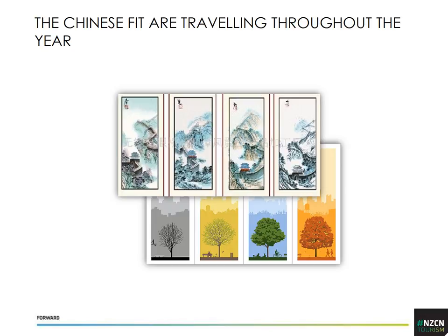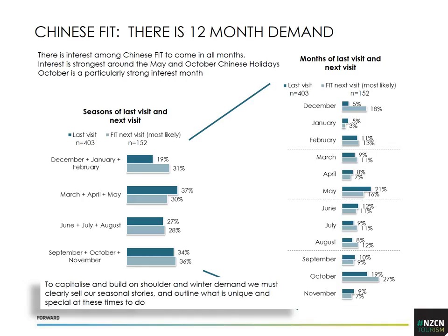The Chinese are definitely interested in traveling throughout our calendar year. In fact, the areas of interest are fairly even and not particularly concentrated during our traditional high period. This graph shows the interest of the China free independent traveler — their demand is even more evenly spread, with interest in each of our seasons almost equally, and on the first visit there is less propensity to come in December, January, and February.